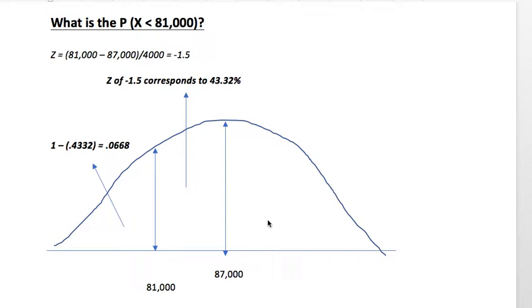Since we're dealing with a population, we know that we have to determine the number of standard deviates, or Z-scores, from 87,000 to 81,000. The formula is Z equals random variable X minus the mean divided by the standard deviation. That's the formula we would use when we're dealing with population data.